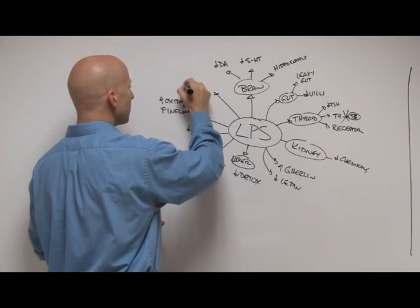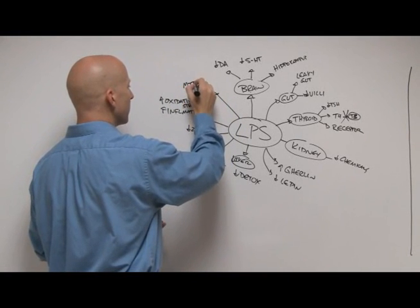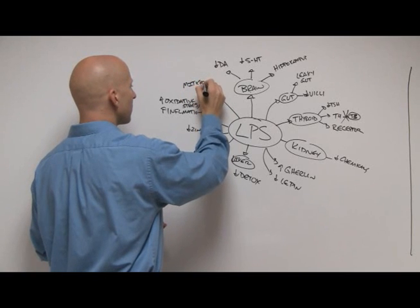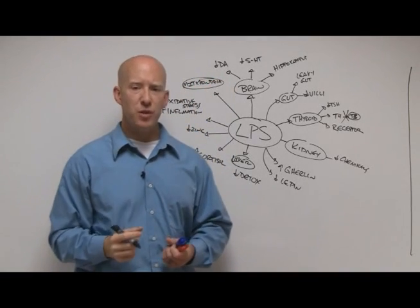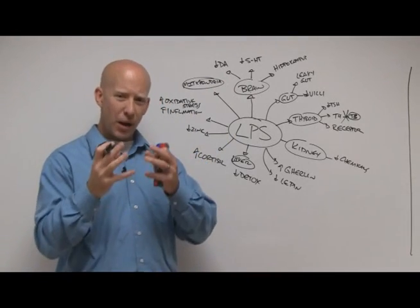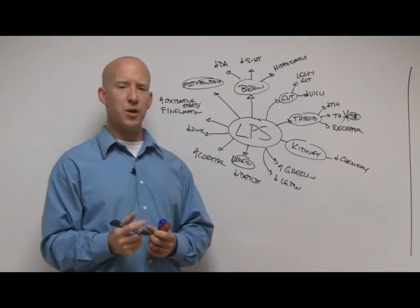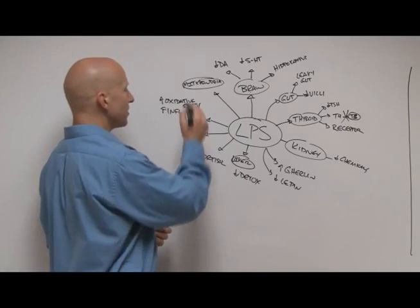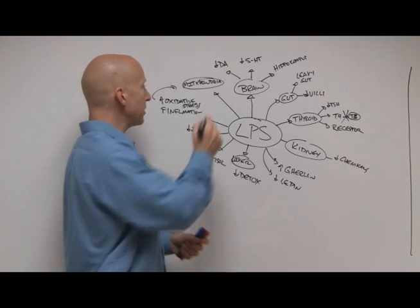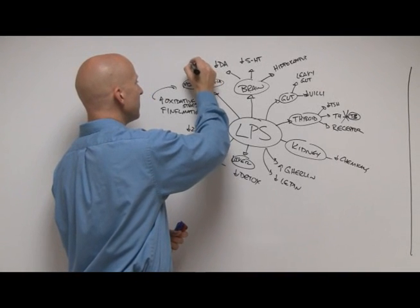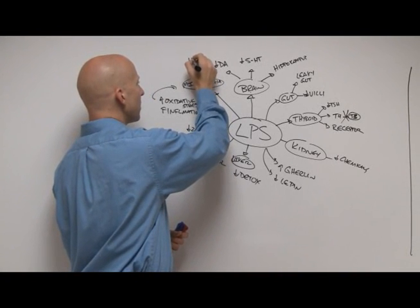Another thing that it does is inside of your cells you have things called the mitochondria. Mitochondria are where ATP is produced, your energy is produced. They are the powerhouses of the cells that make energy for your body. Lipopolysaccharides have been shown to damage mitochondria through oxidative stress and other mechanisms. But then what you have is you have a decrease in ATP, so you have decreased energy.